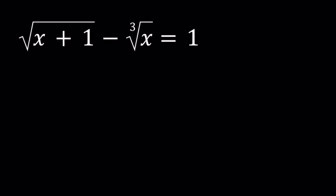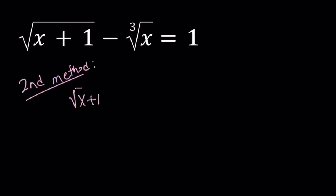Let's start with the second method. So our second method is basically: I'm going to isolate the square root, and that can be written as the cube root of x plus 1. And then I'm going to square both sides. So when you square both sides, you get rid of some of the radicals, but not all of them.